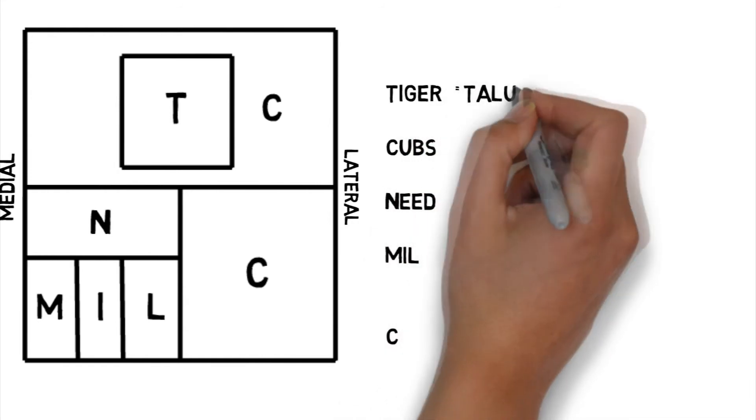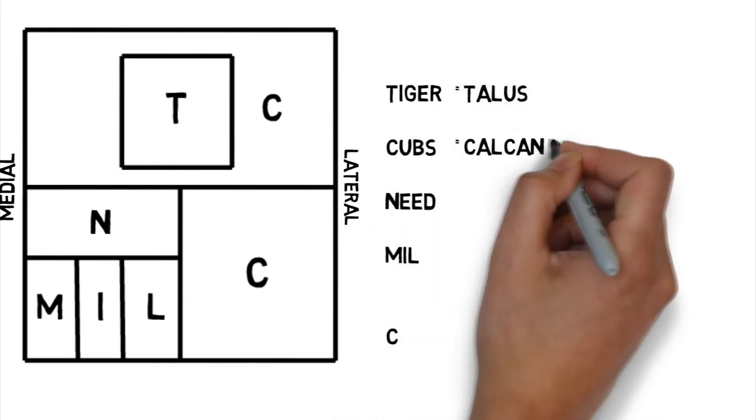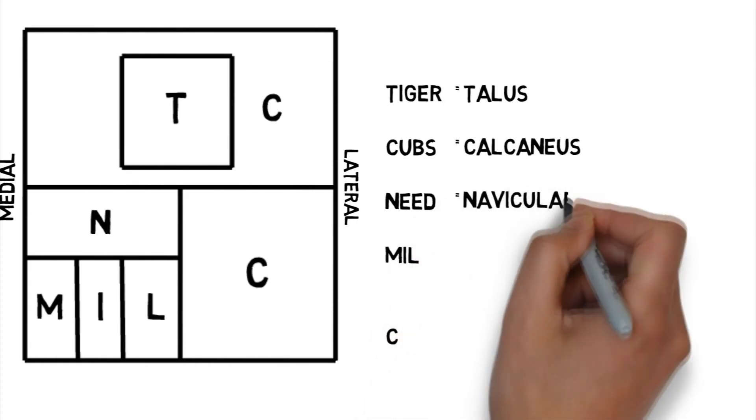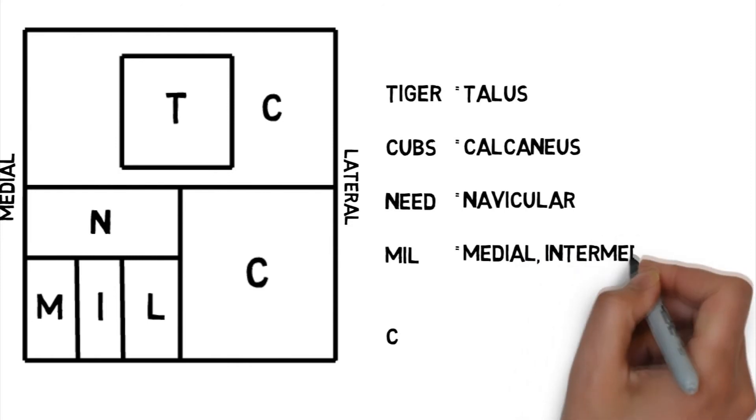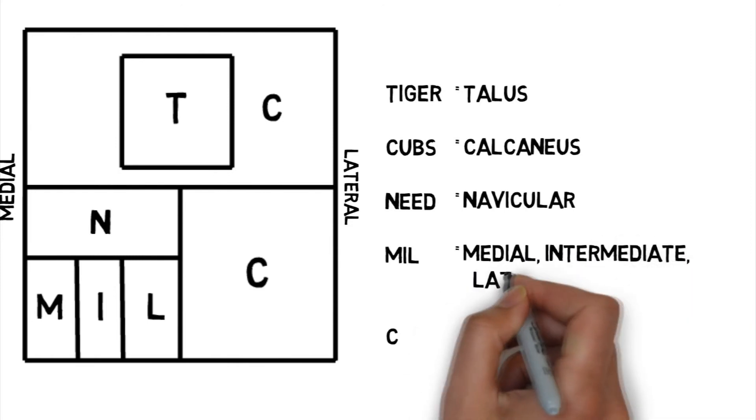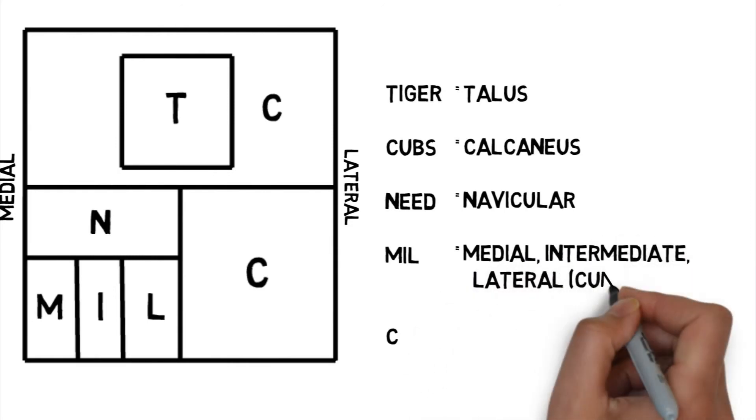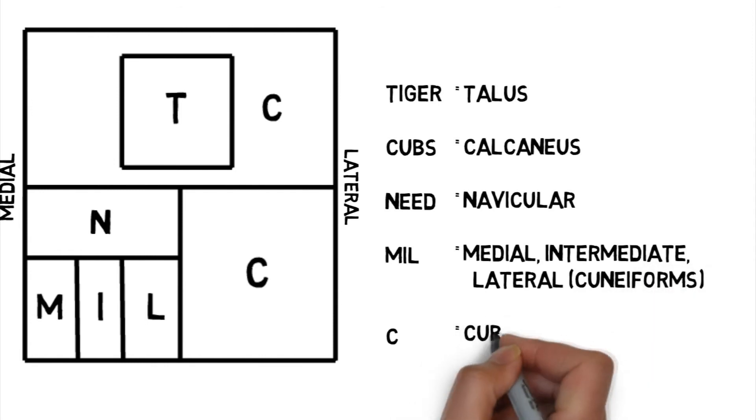And this means talus, calcaneus, navicular, medial, intermediate, and lateral cuneiforms. And the C is for the cuboid. I hope this helps.